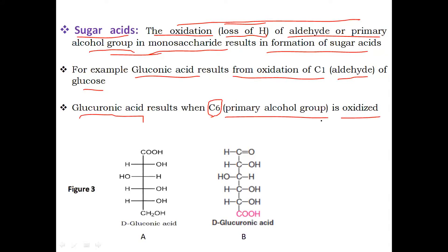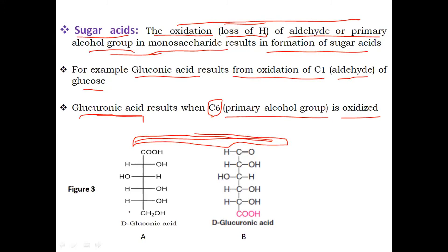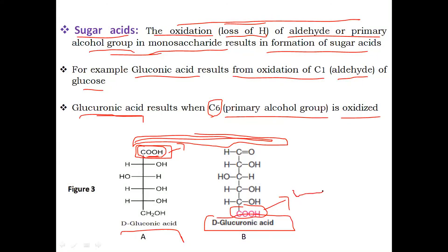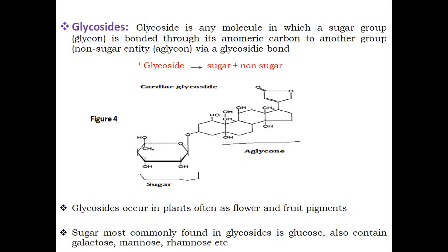For example, gluconic acid results from the oxidation of carbon 1 (which contains the aldehyde group) of glucose, and glucuronic acid results when carbon 6 (the primary alcohol group) is oxidized. In Figure 3, you can see a typical glucose molecule which undergoes oxidation. In D-gluconic acid, the aldehyde group at carbon 1 is converted into an acid. In D-glucuronic acid, the primary alcohol group at carbon 6 undergoes oxidation to form an acid.